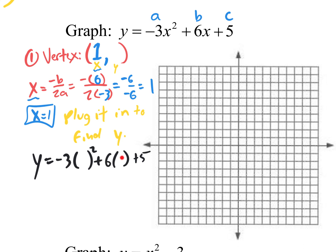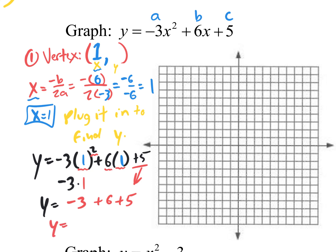Rewriting: y equals negative 3 times (1) squared plus 6 times (1) plus 5. What's 1 to the second power? 1. Negative 3 times 1 is negative 3. 6 times 1 is 6. So y equals negative 3 plus 6 plus 5, which equals y equals 8.